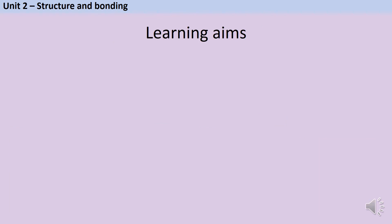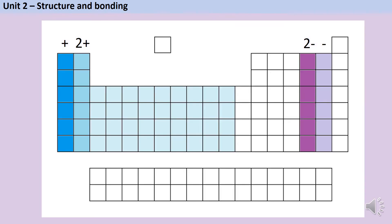Looking back at the periodic table, we can make predictions about the type of ion a particular element will make. Elements from group one always make ions with a single positive charge, group two always makes two plus ions, group six makes two minus ions, and group seven makes single minus ions. An exam tip: before you even look at the questions, write a plus sign in the top left of your periodic table and fill in the rest — this will help if you forget which way the charges go.